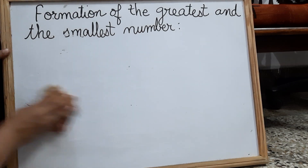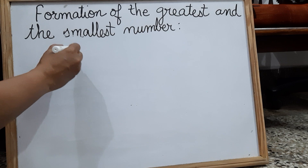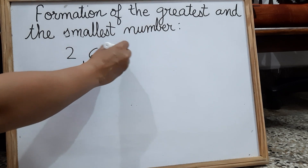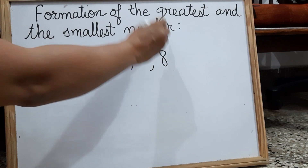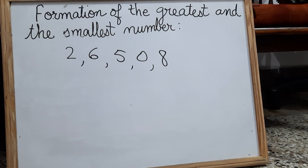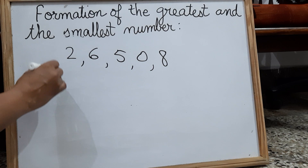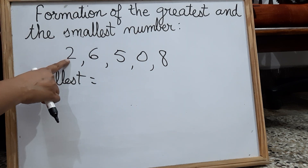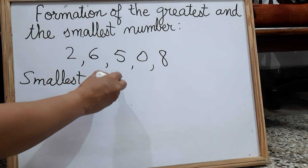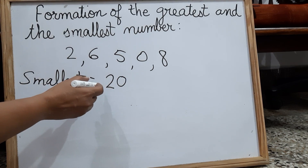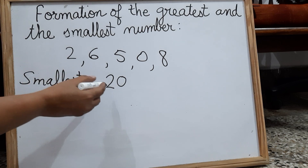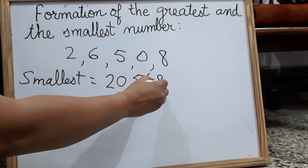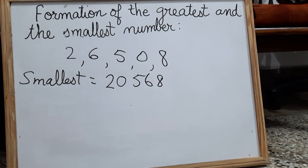Let me take one more zero example for the smallest number. Take digits two, six, five, zero, and eight. Form the smallest five digit number using these digits without repeating them. We don't start with zero. After zero, the next smallest digit is two. So we write two first, then zero, then continue in increasing order: five, six, eight. So it became 20,568 — the smallest five digit number using digits two, six, five, zero, and eight.